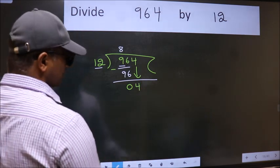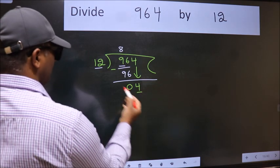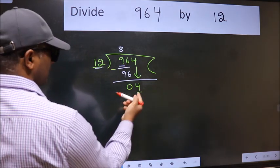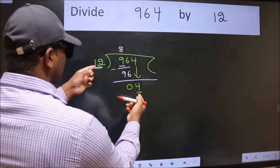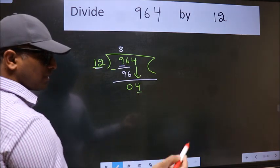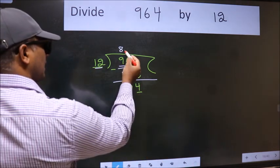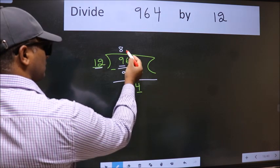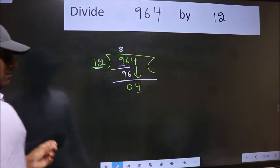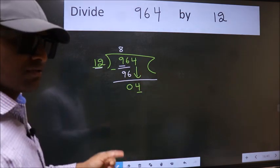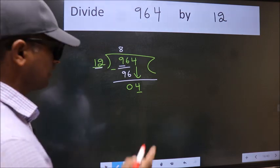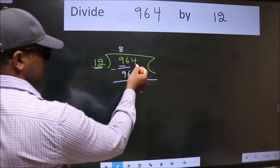And the mistake is this. Here we have 4 and here 12. 4 is smaller than 12. So what many do is they directly put dot, take 0, which is wrong. Why is it wrong? Because just now you brought this number down.